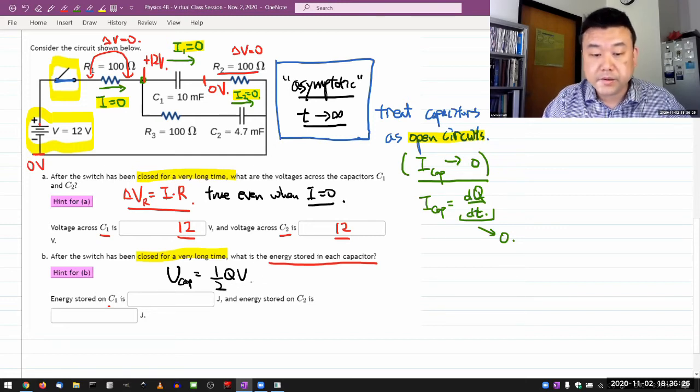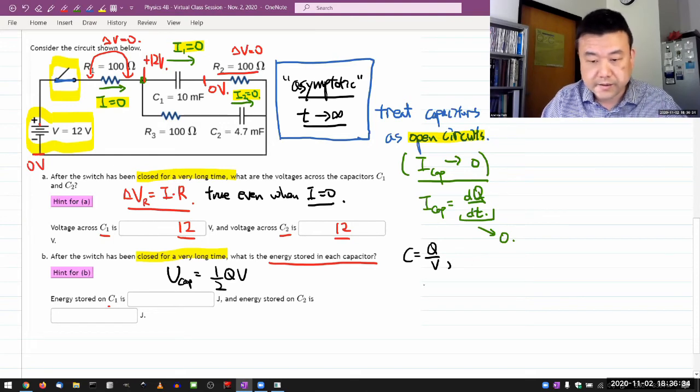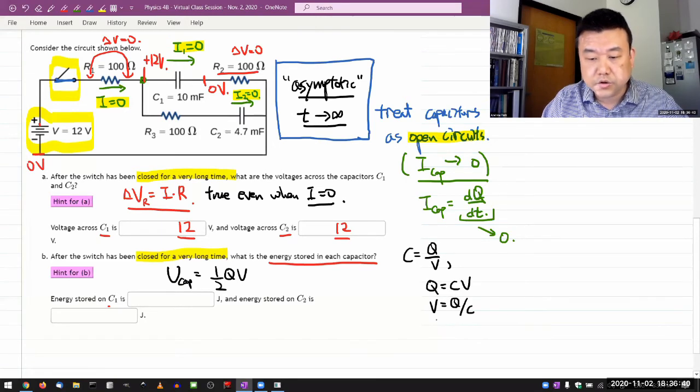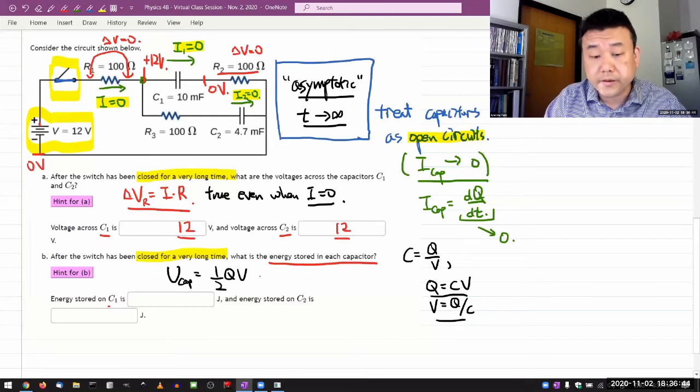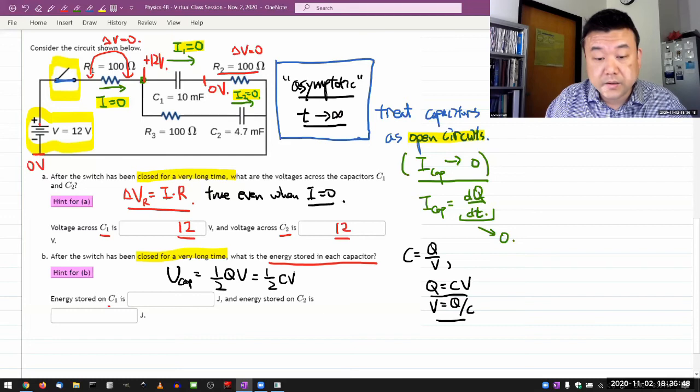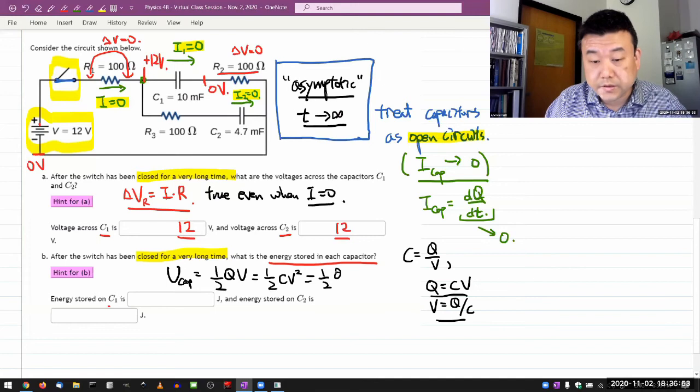This can be written in two different ways by using the definition of capacitance C equals q over v. Or rewriting it, q equals Cv and v equals q over C. Using these to substitute in for q or v, you can either get one half Cv squared or one half q squared over C.